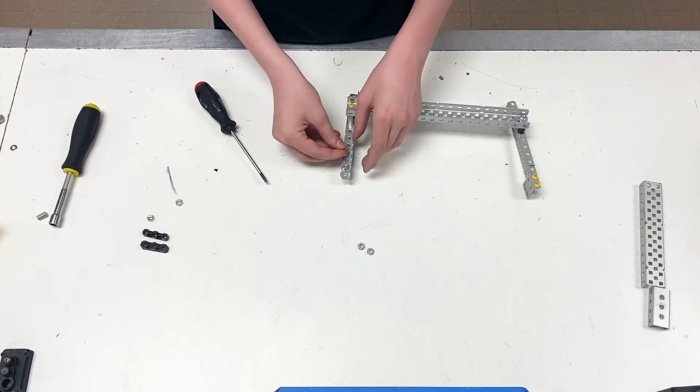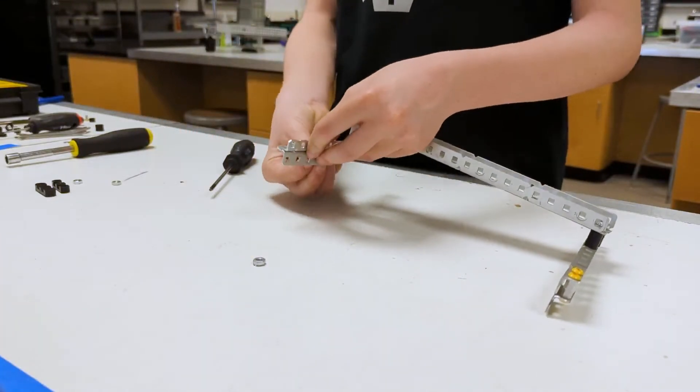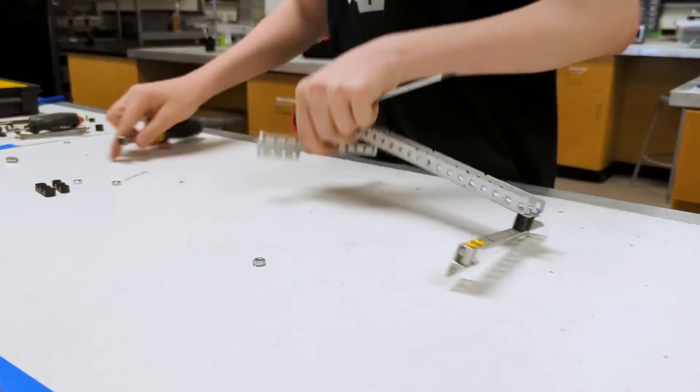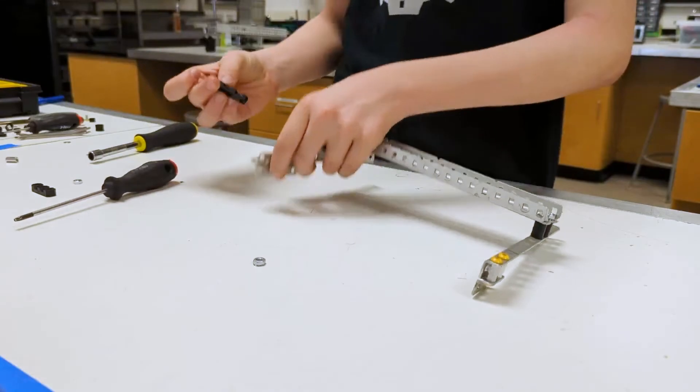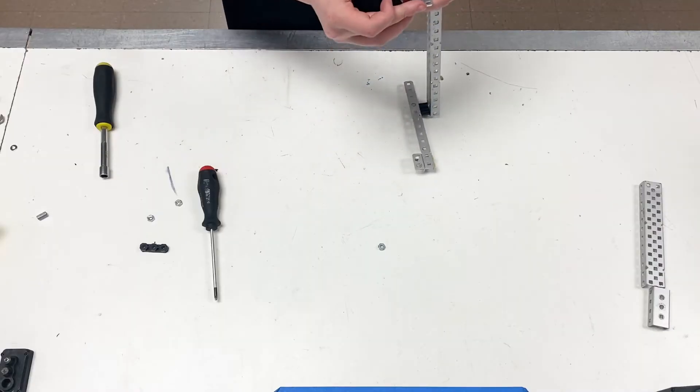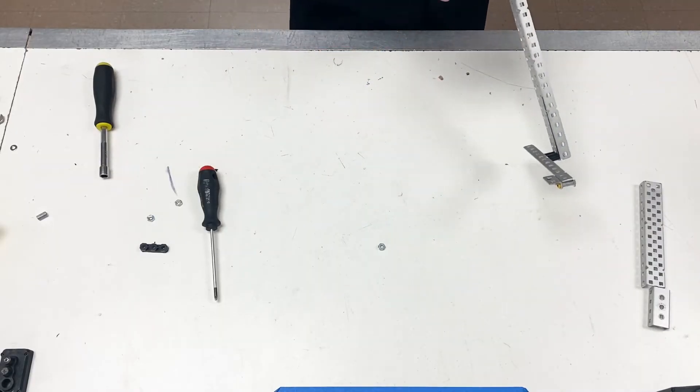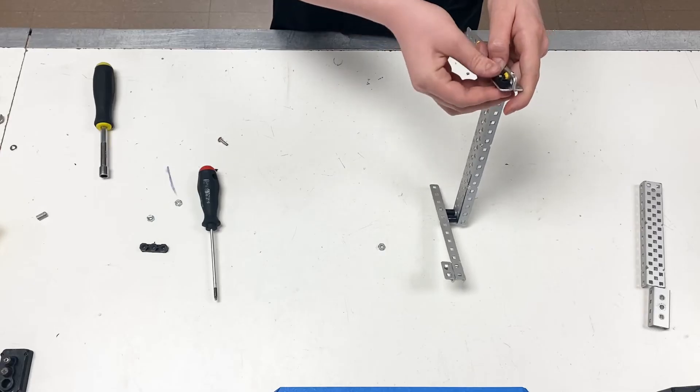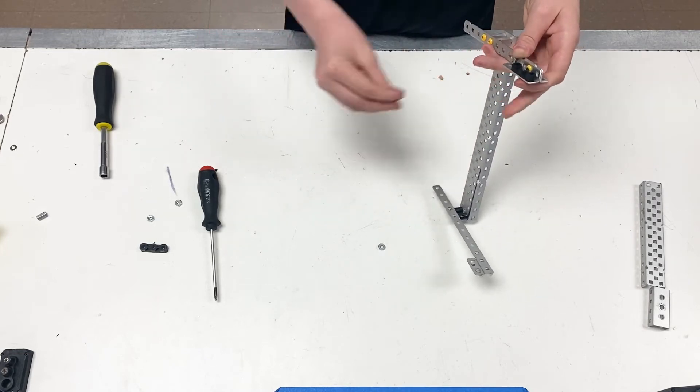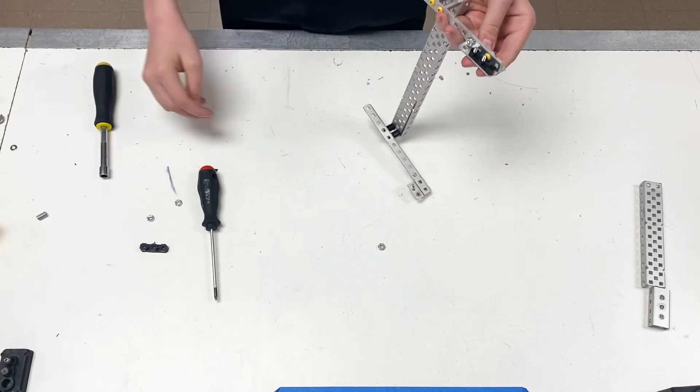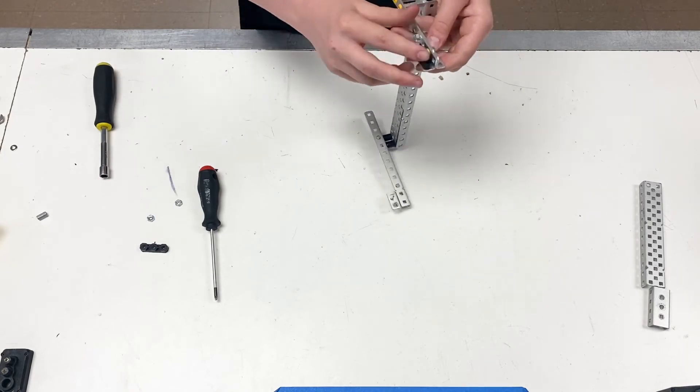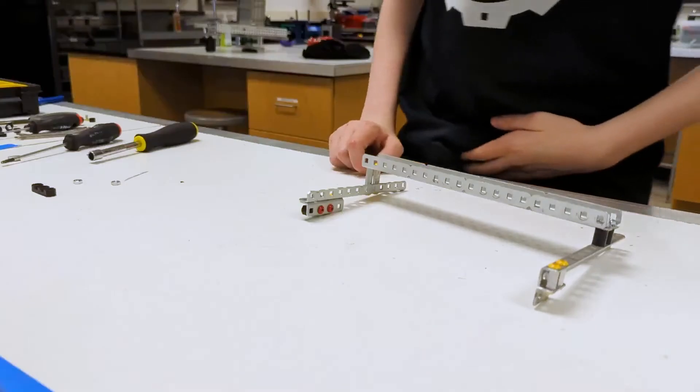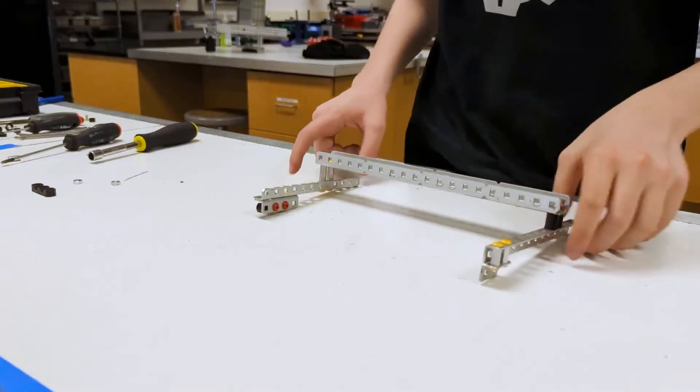Then we're going to use the special bearing, the smaller bearing, and we're going to screw it into this side over here. For this, we're going to have to use half-inch screws going into the middle hole and the bottom hole, leaving the top uppermost hole open. For this, you use two cap nuts. That should be good.